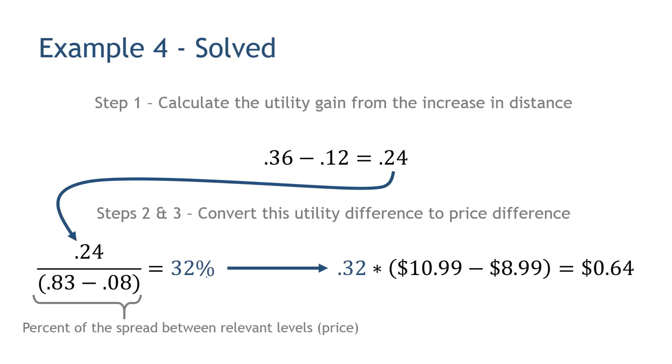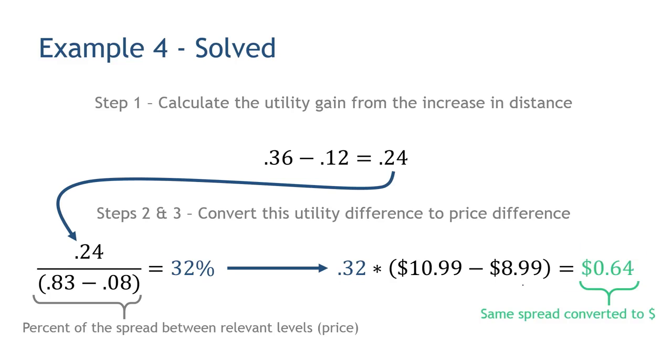I then take that 32% and multiply it by the difference between the two price points — $10.99 minus $8.99, so $2. When I make that calculation, I get 64 cents. That 64 cents is the increased willingness to pay for the increase in distance. You can do this for different segments, different balls, not just increases in distance — you can even do it for decreases in attributes. The exact same math will tell you how much less consumers would be willing to pay. This is a very common and very useful set of metrics that comes out of a conjoint analysis.